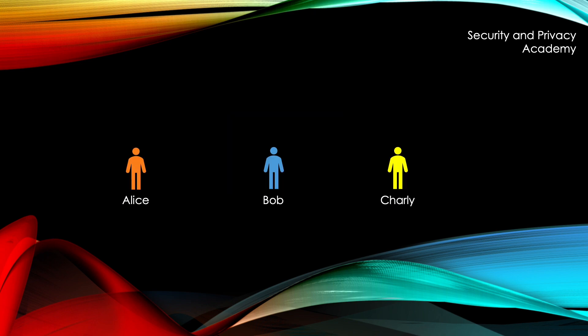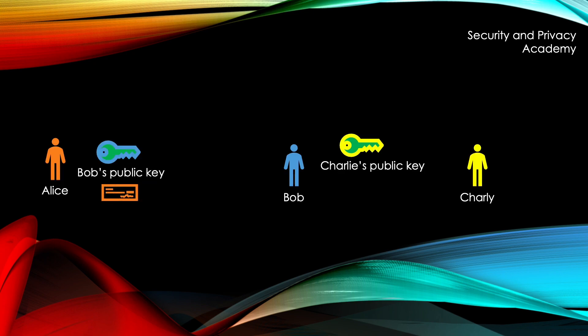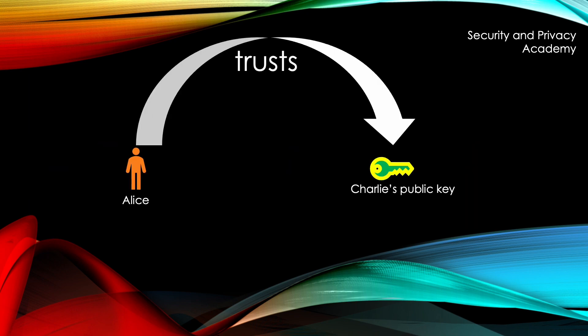In Web of Trust, we have a transitive system. If we have a couple of parties — in this case Alice, Bob, and Charlie — and Alice trusts Bob, and Bob trusts Charlie, the transitive property of the Web of Trust means that Alice trusts Charlie. So A trusts B, B trusts C, therefore A trusts C. In practice, Alice trusts Bob, so she signs Bob's public key. That means everybody who trusts Alice now also trusts Bob. Bob knows Charlie, Bob trusts Charlie, so Bob signs Charlie's key. By the transitivity rule, Alice now trusts Charlie's key, and everybody who trusts Alice also trusts Charlie. This is how trust propagates throughout the Web of Trust.